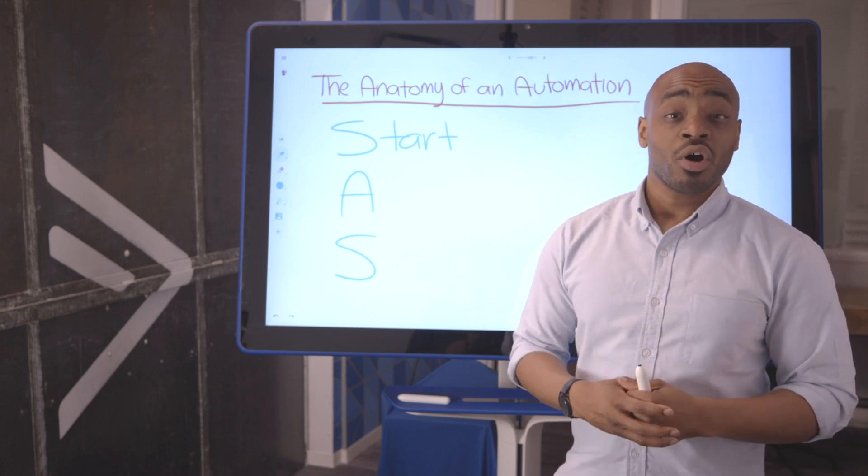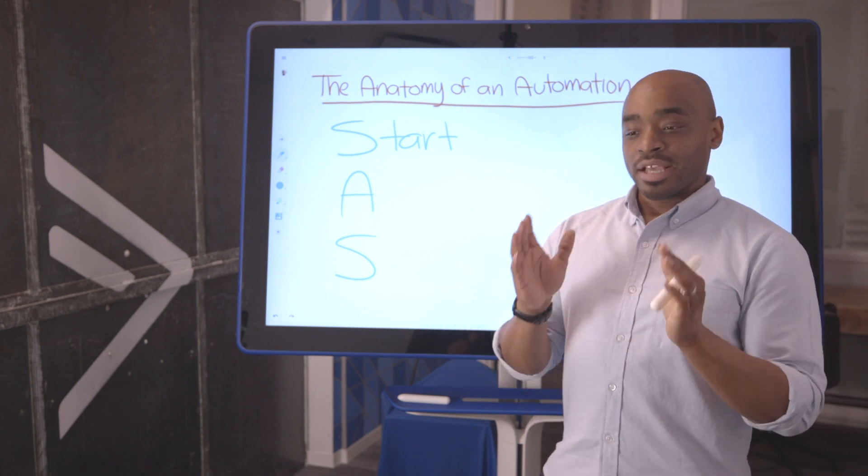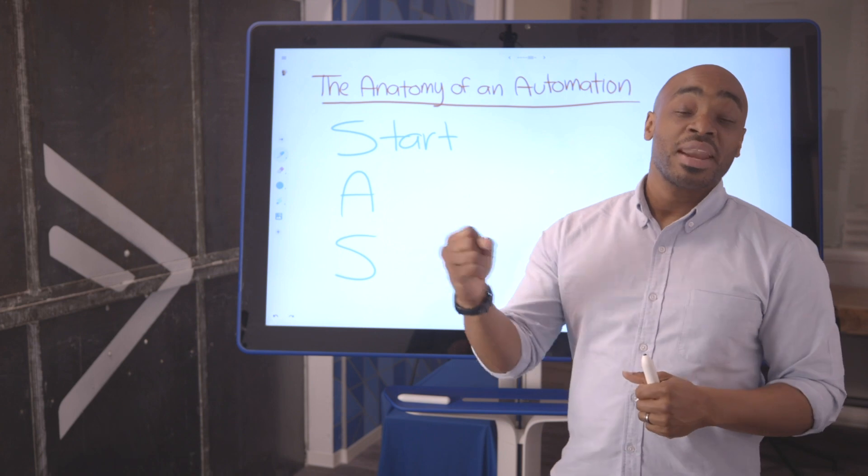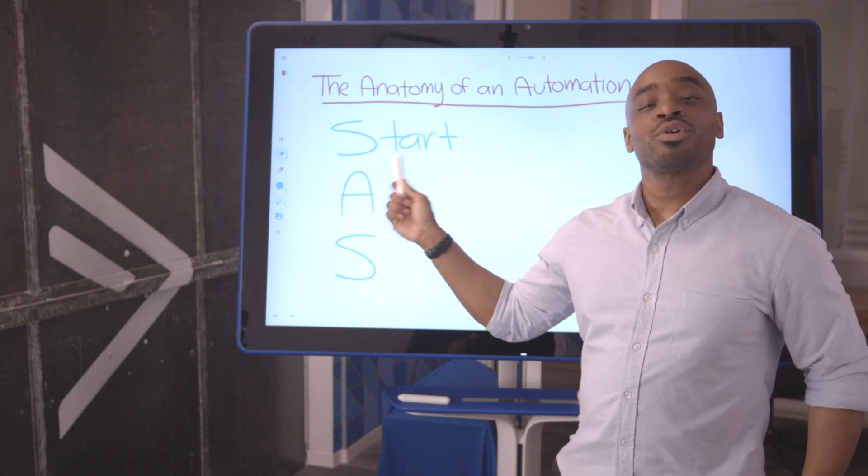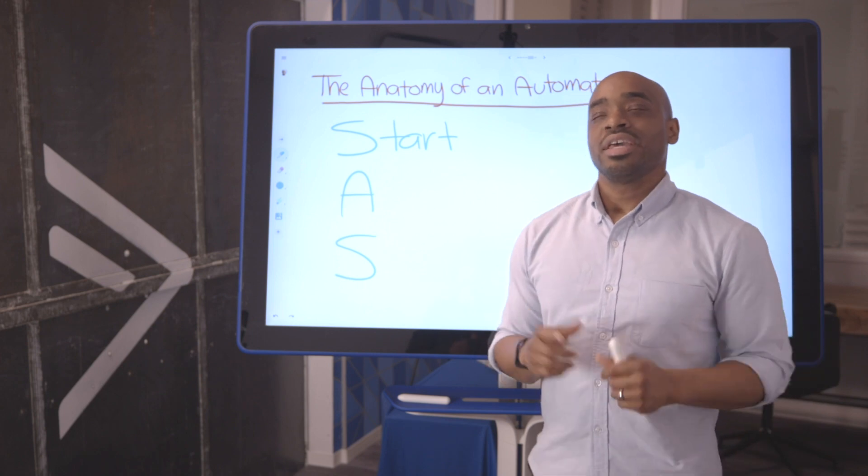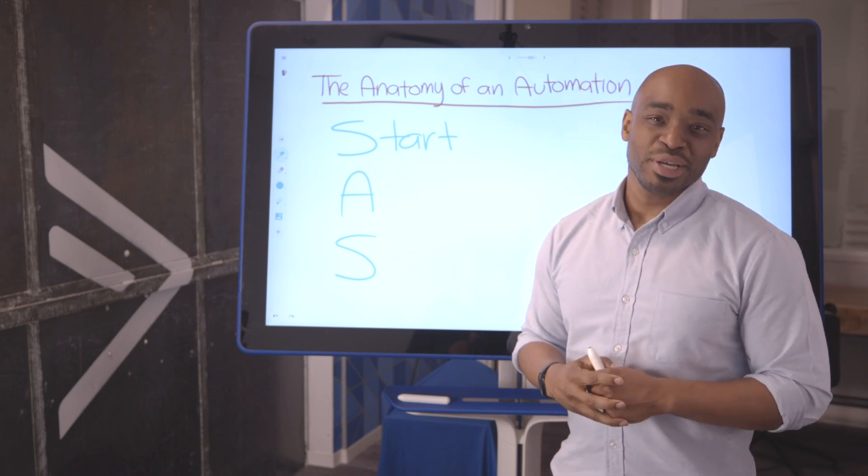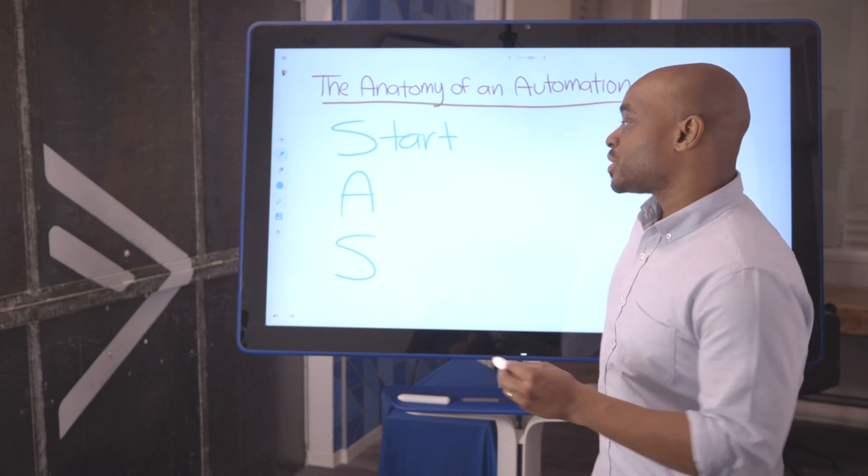For instance, we have a start trigger called submits a form. As soon as a contact submits a form, that automation is started. So the question you need to be asking yourself before you start building out your automations is, how do I want this automation to start? Let's go on to the next one.